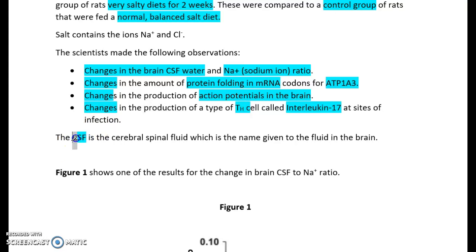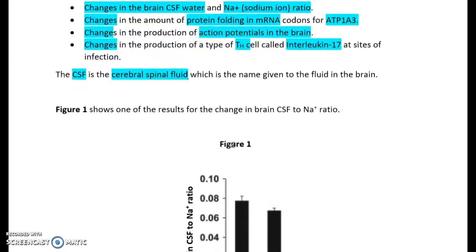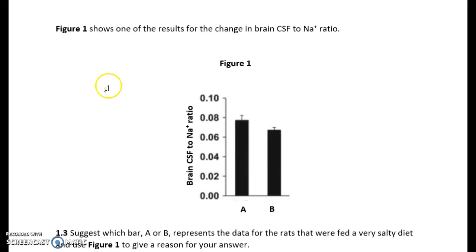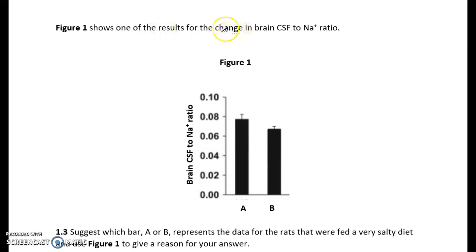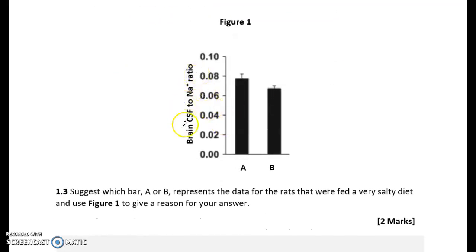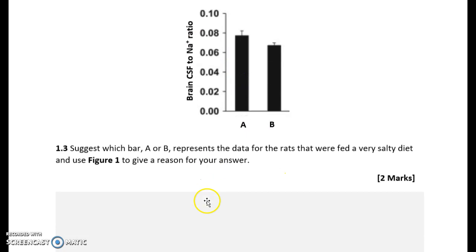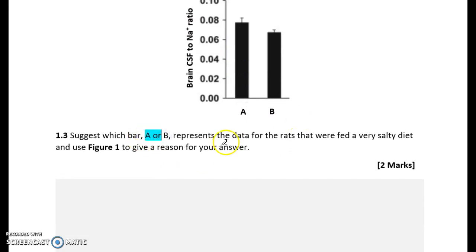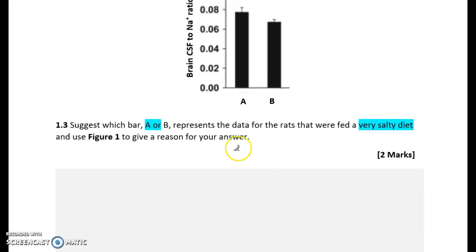The CSF is the cerebrospinal fluid - the name given to the fluid in the brain. Figure one shows one of the results for the change in brain CSF to sodium ion ratio. Looking at the axes: brain CSF to sodium ion ratio, with bars A and B. The question says to suggest which bar, A or B, represents the data for rats fed a very salty diet, and use figure one to give a reason for your answer.